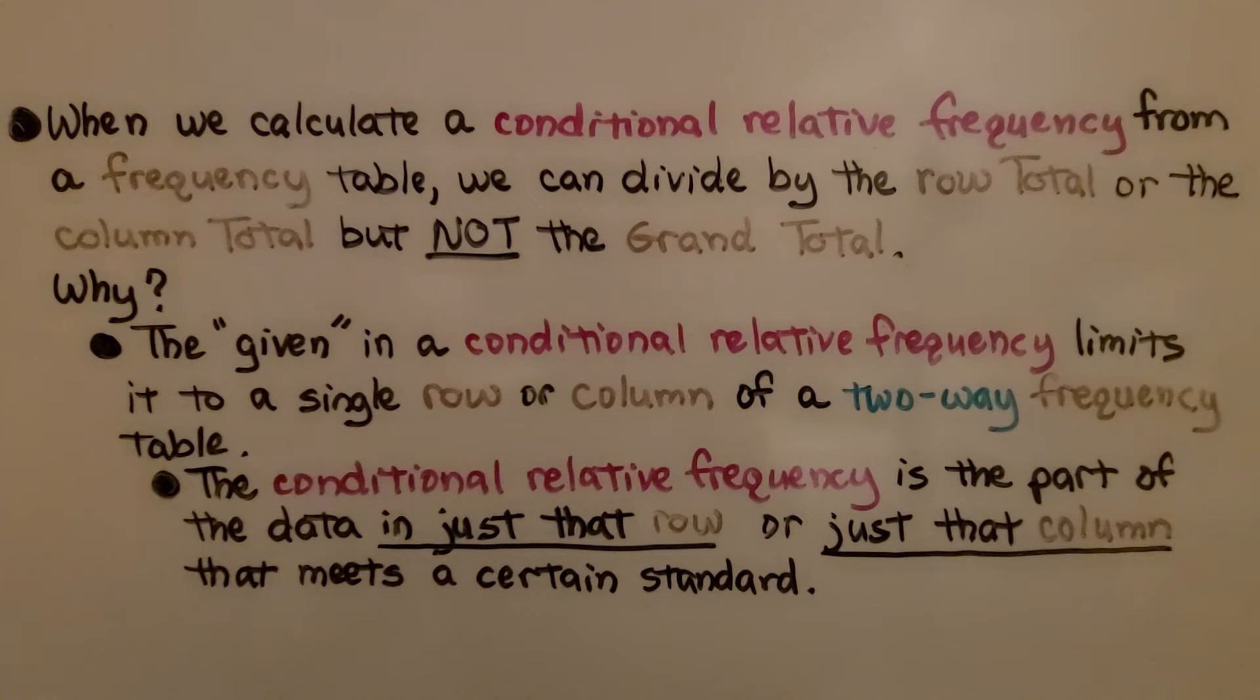Well, the given in a conditional relative frequency limits it to a single row or column of a two-way frequency table. The conditional relative frequency is the part of the data in just that row or just that column that meets a certain standard, a certain criteria.